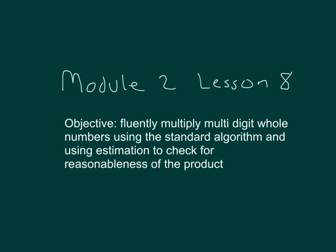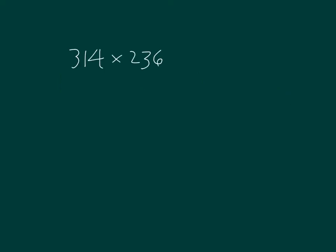Within this lesson you will fluently multiply multi-digit whole numbers using the standard algorithm. 314 times 236. Round each factor to estimate the product.